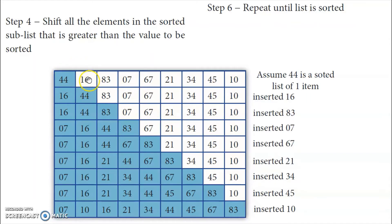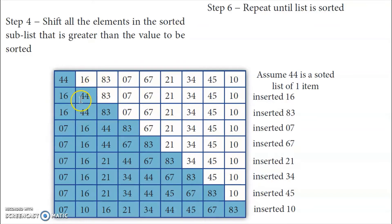Now we go to the third element. The third element is 83. We start comparing with the elements in the sorted sublist. The first two elements are already in sorted position. Comparing with 16 — it is smaller. Comparing with 44 — 44 is also smaller than 83. So 83 remains in its position. Now the first three elements are sorted.